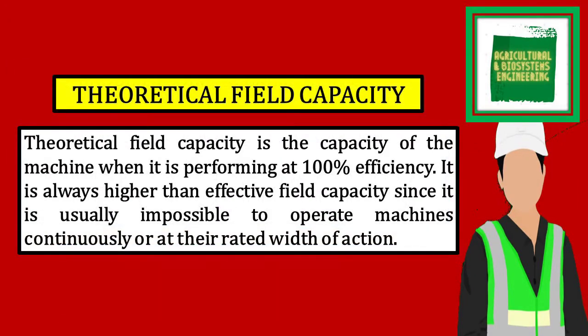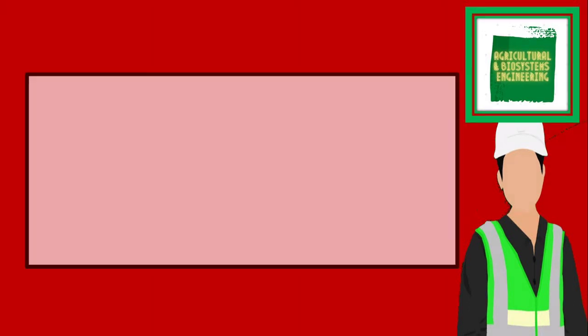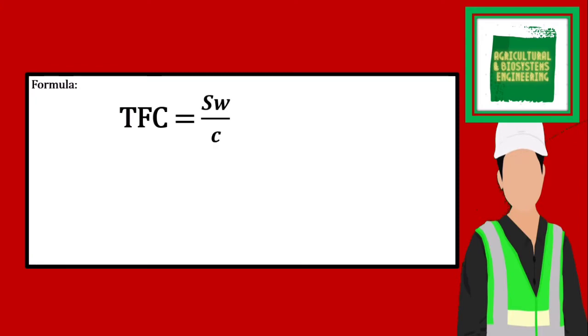Before we proceed, let us first define theoretical field capacity. It is the capacity of the machine when it is performing at 100% efficiency. It is always higher than effective field capacity since it is usually impossible to operate machines continuously or at their rated width of action. The formula in getting theoretical field capacity is TFC is equal to SW over C.